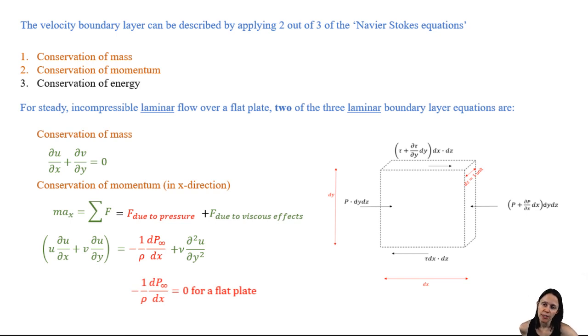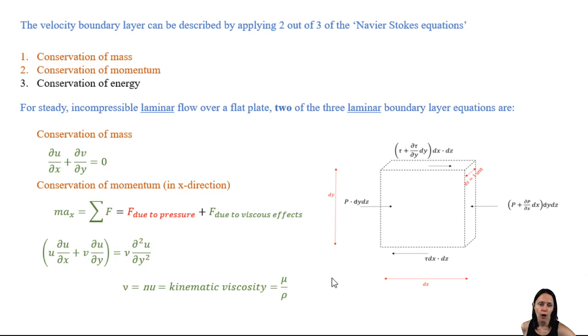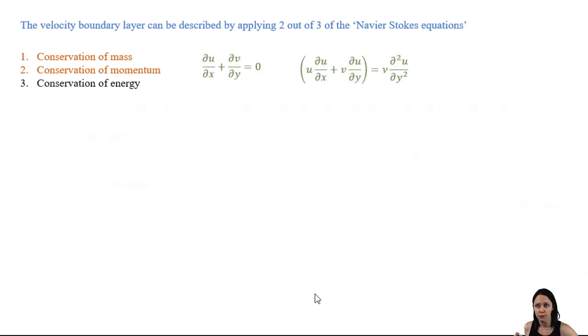There is another term in the equation which is not listed here, and that's force due to body forces. So that would be forces due to gravity, which are ignored here for a forced convection analysis, but end up being very important in free convection. So we have our conservation of mass and our conservation of momentum, two differential equations that have velocity gradients in the x and the y-direction. How can we simultaneously solve for this? Not easily.